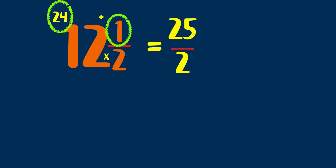Plus I have the one left over, the one half from before. So 24 plus the one gives me 25 over two. So that's a fast way of converting mixed numbers into improper fractions.